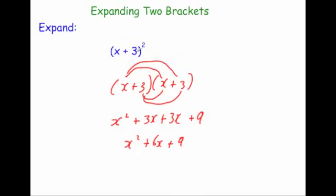So if you ever have a squared beside a bracket what you need to do is to write the bracket out twice and then expand using FOIL. And that's it. So that's how to expand two brackets.